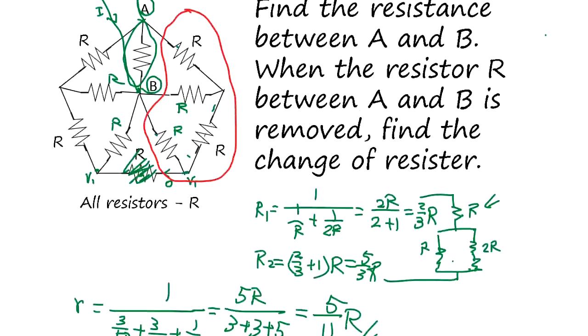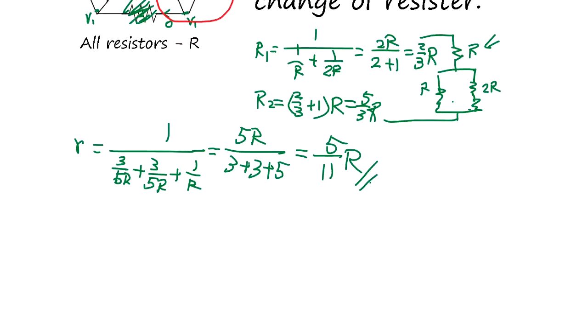So this is the total resistance between point A and B. So if you remove R, the question is if you remove this, how much is the change? Well, actually it's exactly the same thing in parallel, so just divide by two.